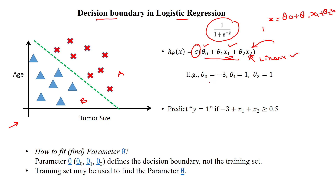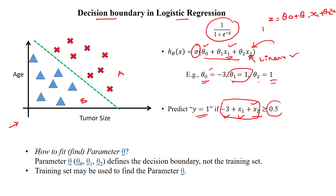When you give random values for theta_0, theta_1, theta_2, our equation becomes: theta_0 is minus 3, theta_1 is 1 into x1, and theta_2 is 1 into x2. We predict the value as 1 whenever the output of the sigmoid function is greater than or equal to 0.5.